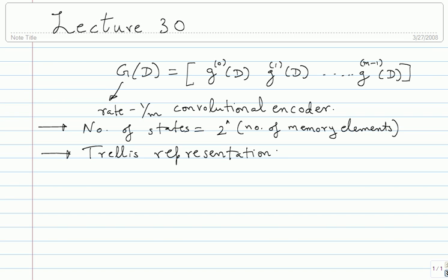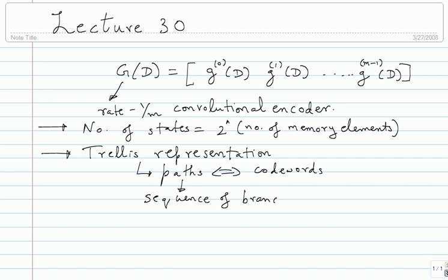The trellis representation is nothing but a state diagram with the time axis. In the example we saw, the number of memory elements was 3 and it was an 8-state encoder. There are a few things illustrated in the trellis: paths correspond to codewords. Each codeword is split into several stages; the output at each stage is assembled into one path, giving a codeword of the entire convolutional code.